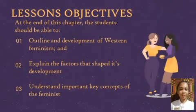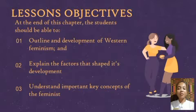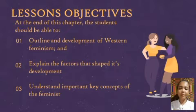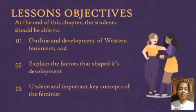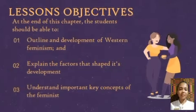At the end of this chapter, the students should be able to: Number 1, outline the development of Western feminism. Number 2, explain the factors that shaped its development. Number 3, understand important key concepts of feminism.